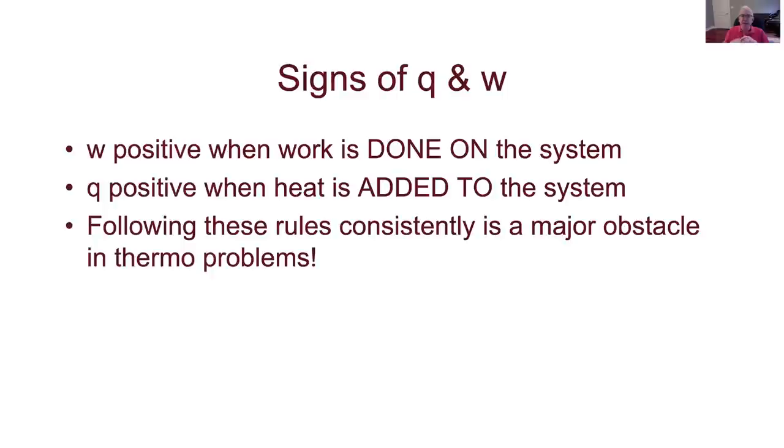Another couple words about the signs on Q and W. This is an important thing. One of the ways that people get in trouble in thermodynamics problems is by getting the signs twisted around. Work is defined the way we have the equation set up. Work is defined as being positive when work is done on the system. Think about it. If work is being done on the system, that means my system is being compressed. That means the world is squeezing in on it. That amounts to a flow of energy into the system. If, on the other hand, if the system is doing the work, then it's pushing out, it's spending some energy to move the surroundings out of the way. So that's energy flowing out.